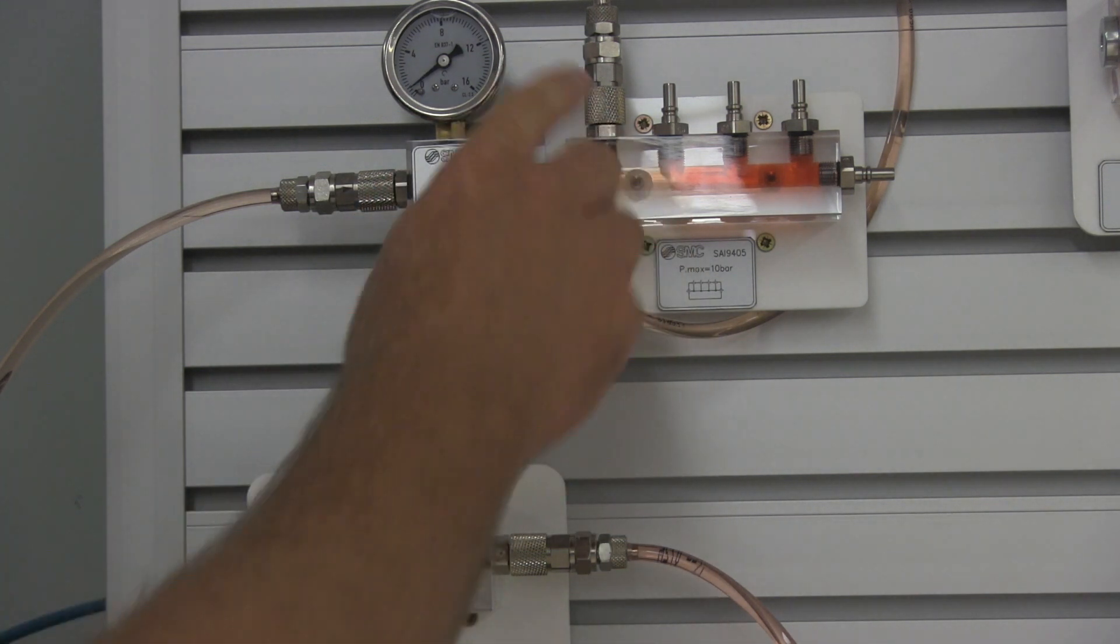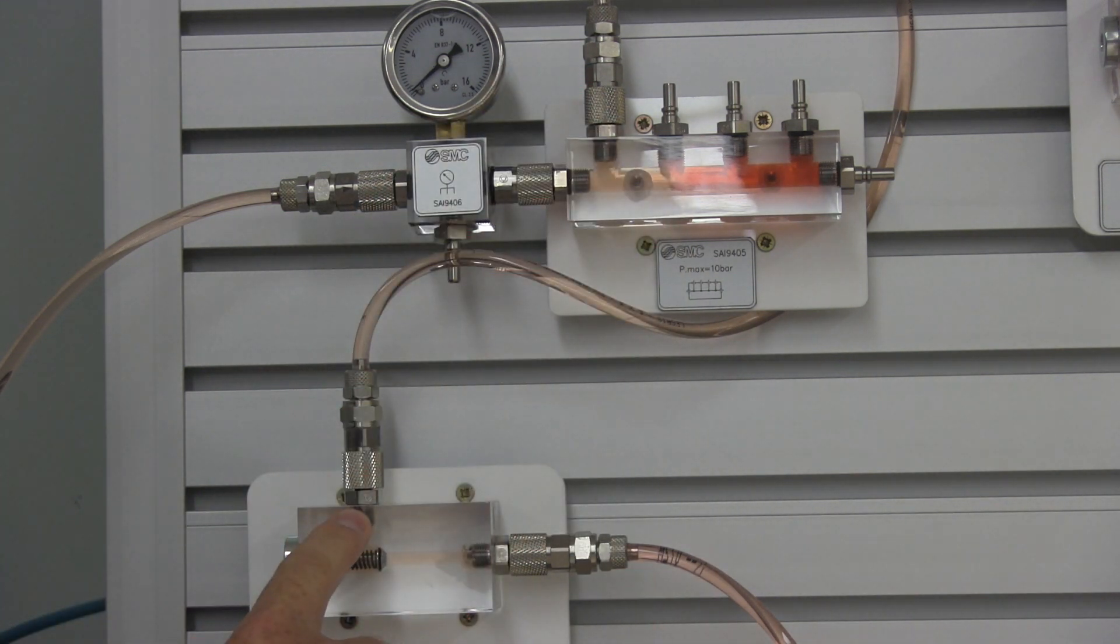Now what I've done is I have my pressure coming through here, through the manifold, down to my B port. My A port is connected back to tank and we should not get any flow through here because the poppet extends out and goes into its seat.